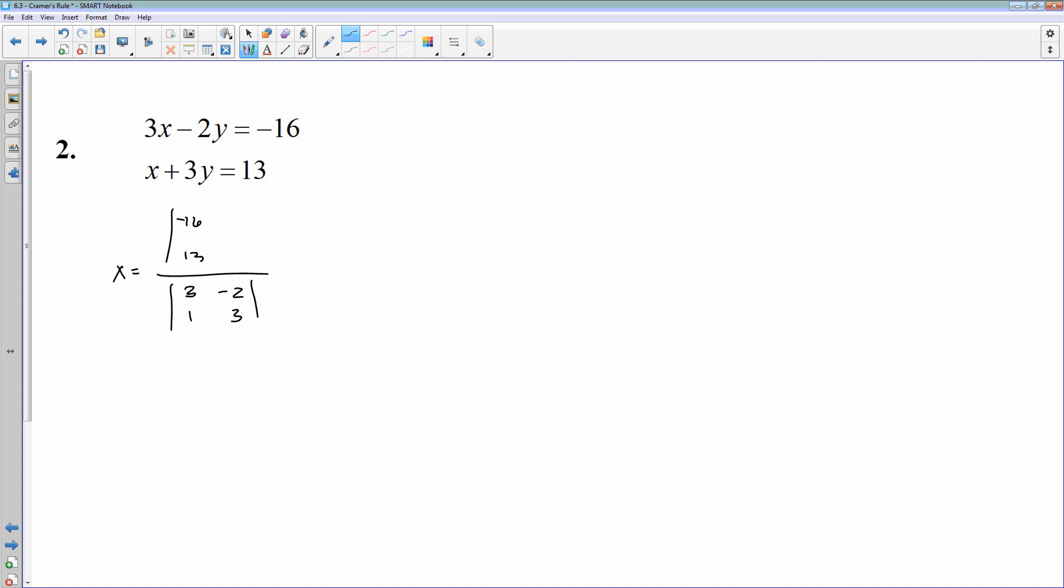And then we'll work that out. Negative 16 times 3 is negative 48. Minus 13 times negative 2 is going to be plus 26. All divided by 3 times 3 is 9. Minus 1 times negative 2, which would be plus 2. And then we have negative 48 plus 26 is negative 22. 9 plus 2 is 11. Negative 22 over 11 is negative 2. So now I know what X is.